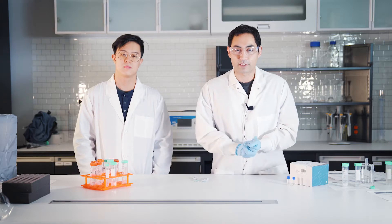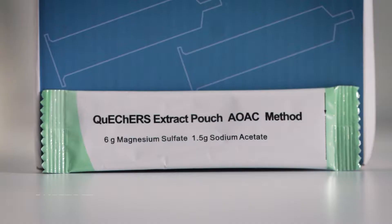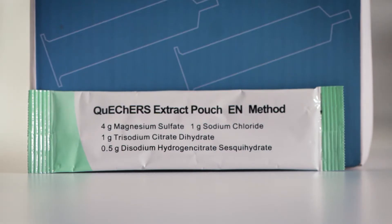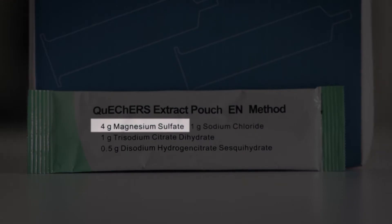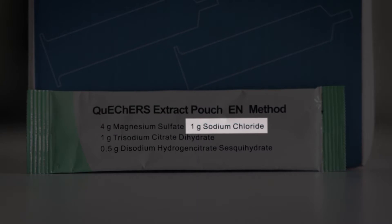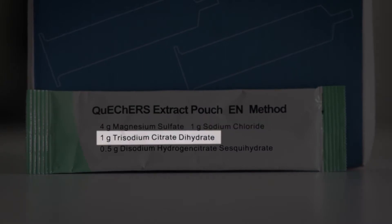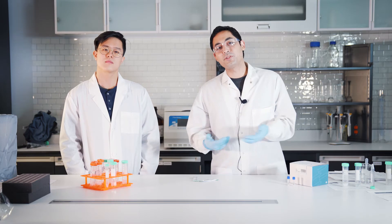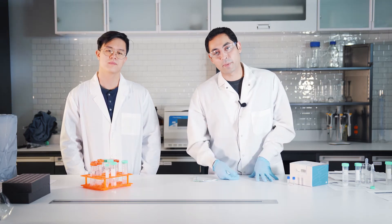For the EN method, that's the European method, it's 4 grams of magnesium sulfate, 1 gram of sodium chloride, 1 gram of trisodium citrate dihydrate, and half a gram of disodium hydrogen citrate sesquihydrate. Why would you choose one over the other? It's basically dependent on the recovery that you would get.